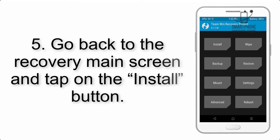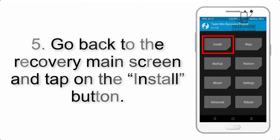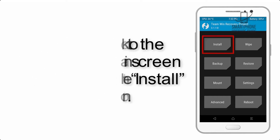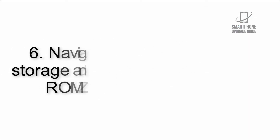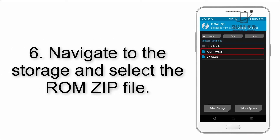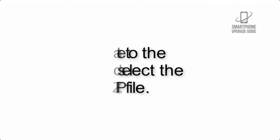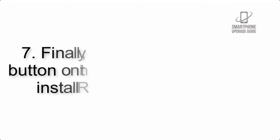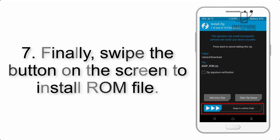Step 5: Go back to the recovery main screen and tap on the Install button. Step 6: Navigate to the storage and select the ROM zip file.